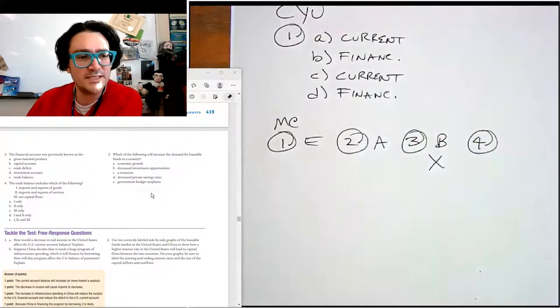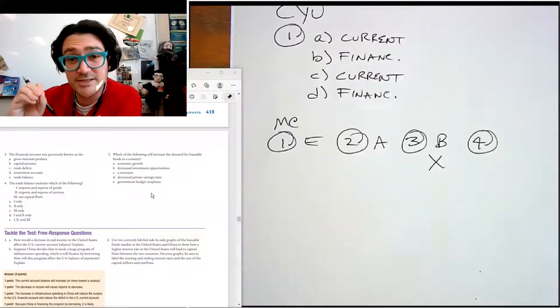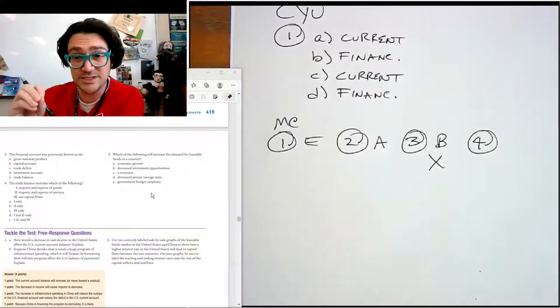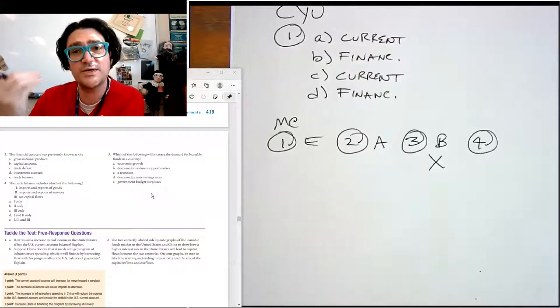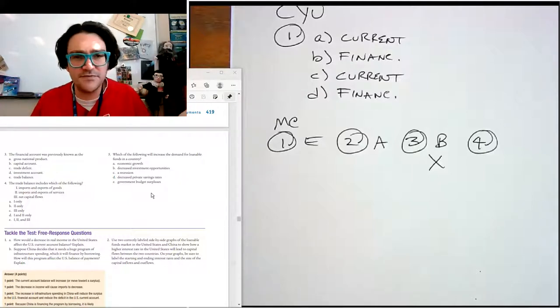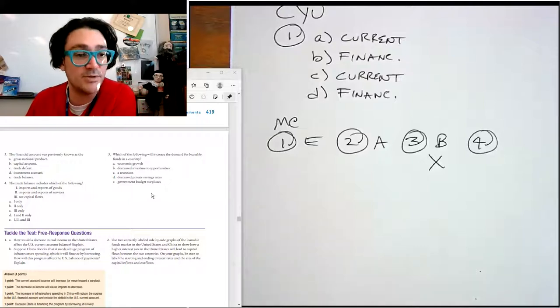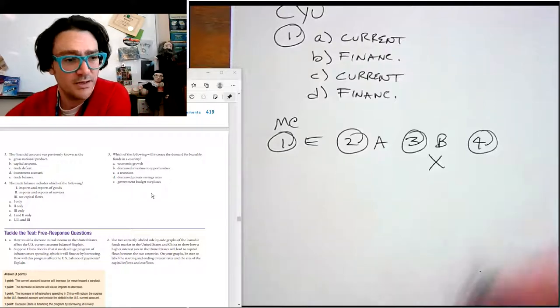Number four, the trade balance includes, so this is just within the current account, it's the trade balance. So it's just the one in goods. This is not going to involve anything else. So sometimes people really focus on the balance of trade as opposed to all of the current account because the current account has all kinds of other stuff in it. So sometimes you'll hear people just focus on the trade balance and that's imports and exports of goods only. A.